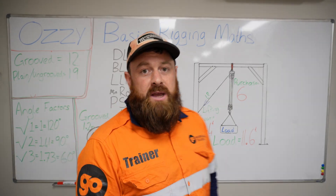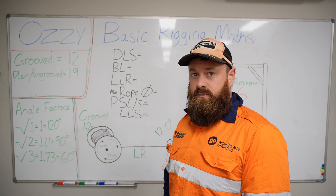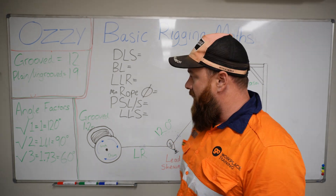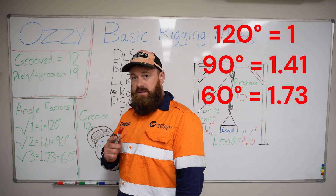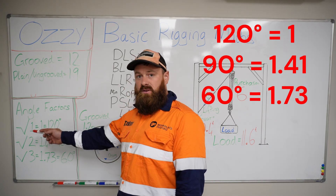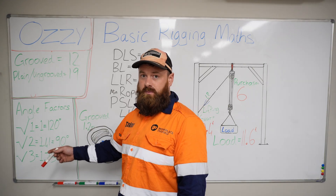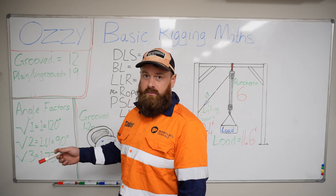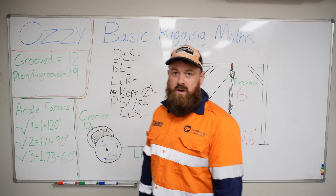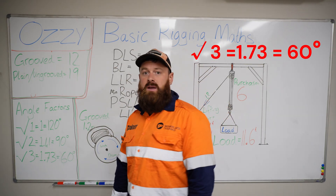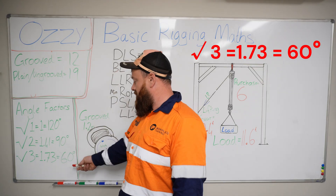If you're doing basic rigging you've already completed your dogging. We need to be able to remember our angle factors. A good way to remember angle factors is to square root the numbers 1, 2 and 3. Which number is stronger? 3. Square root the number 3 and you will get 1.73. That is the angle factor for 60 degrees.